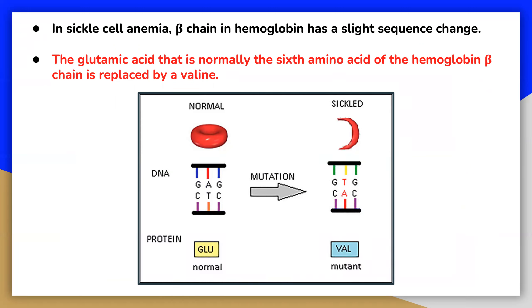The glutamic acid that is normally the sixth amino acid of the hemoglobin's beta chain is replaced by a valine amino acid. This substitution is shown for a fragment of the beta chain in the diagram.